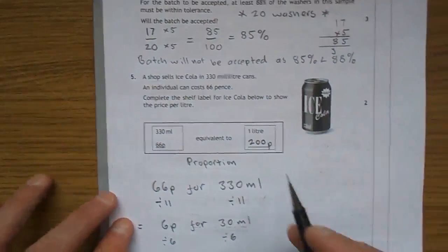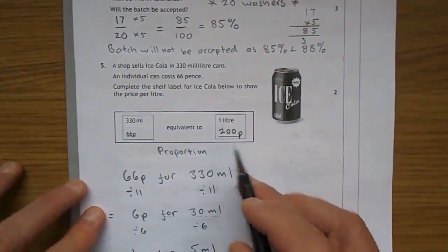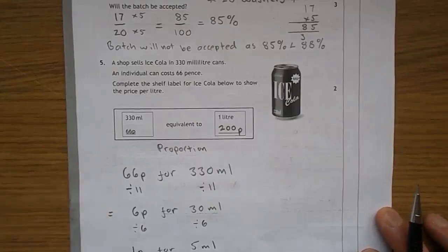So back in completing the table there, 1 litre, 200 pence or 2 pounds, I'm sure they'd be okay with that.